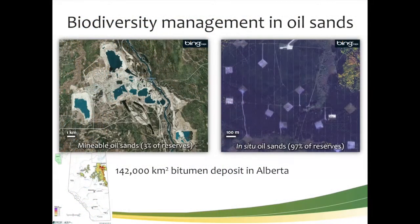From a biodiversity standpoint, although there is complete loss of biodiversity within the open pit area with reclamation following, roughly 15–20% of the area is disturbed in the SAGD in situ disturbances. One of the major questions is to what effect does that change biodiversity and how much are edge effects associated with these? The unique aspect of the fragmentation associated with in situ disturbances is that they're linear.